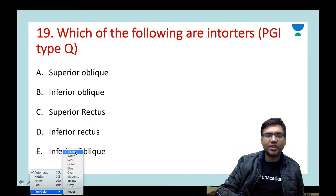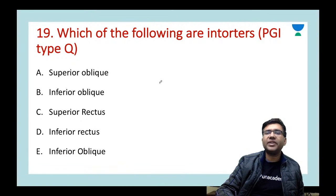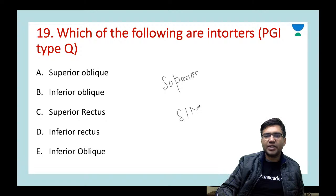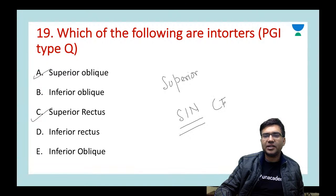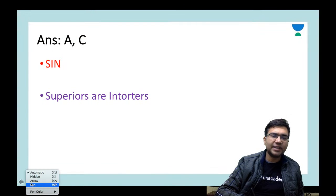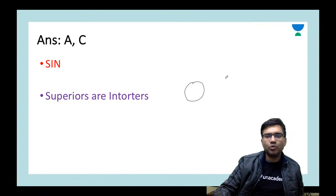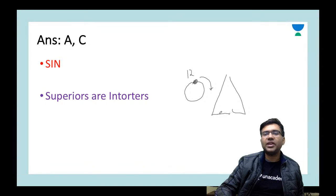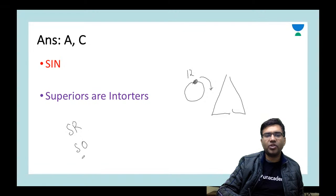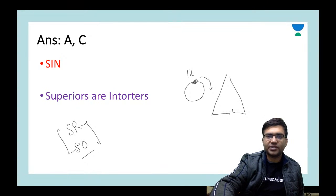Next question: which of the following are intorters of the eyeball? Whenever we talk about intorters, the superior muscles are the intorters. Remember the mnemonic SIN: Superior oblique and superior rectus are the Intorters. Intorters are muscles which move the 12 o'clock point of the cornea towards the nose.